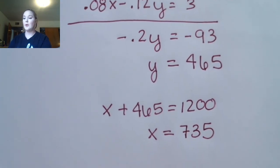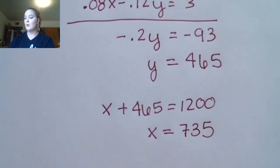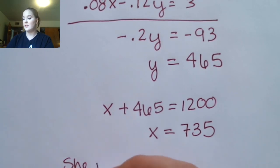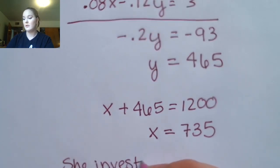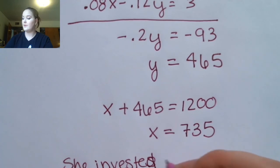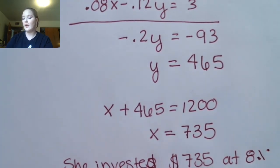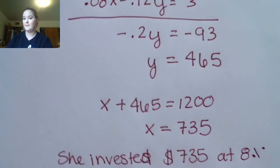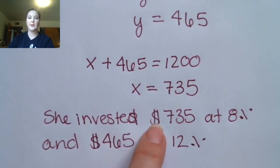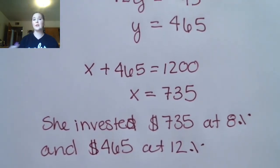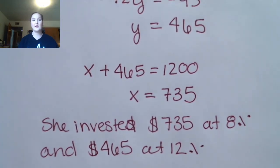I still have to solve for x. It's much easier to plug into the first equation: x plus 460 equals 1,200, giving x equals 735. Since it's a word problem, I'll write out the solution: she invested $735 at 8% and $465 at 12%. Because it's a word problem, putting this in an ordered pair wouldn't really make sense, so make sure you match your solution type to the question type.